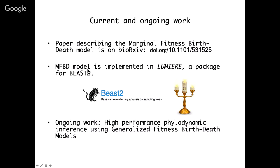Recent work in my lab has focused on developing a higher-performance or faster phylogenetic modeling framework using what we call generalized fitness birth-death models. The basic idea is that for pathogens or any organism, we have a whole bunch of characters — which could be molecular sequence characters, evolving phenotypes, or even the environment in which an organism lives — and we use these features to predict the overall fitness of an organism. How we go from low-level genotype features to population-level fitness is unclear — it's nothing less than the genotype-phenotype map that biologists have been trying to figure out since the dawn of genetics.